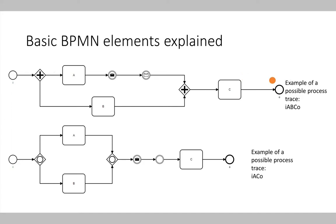For example, in the upper part of the process, a possible process trace would be: the process starts with start event I, then activity A is executed, then activity B, then the join gateway, then activity C, and the process ends with end event O. A different possibility would be that the process starts with I, reaches the parallel split gateway, but now activity B is executed first, followed by activity A, then activity C. So besides the trace I-A-B-C-O, the trace I-B-A-C-O would also be a valid process trace.